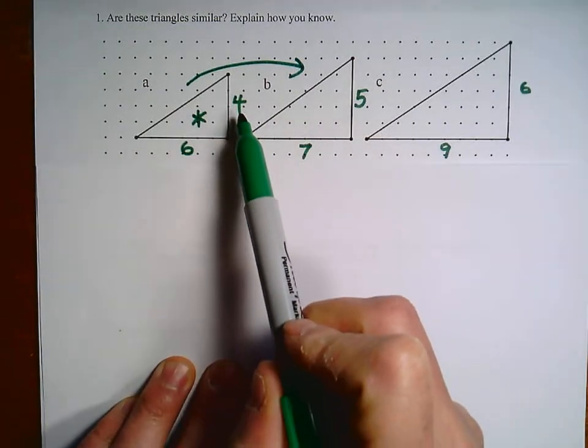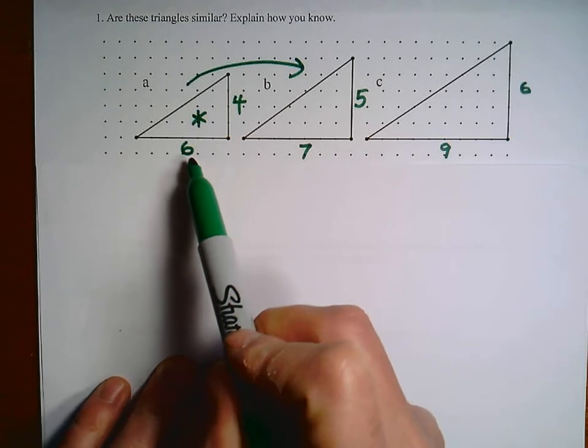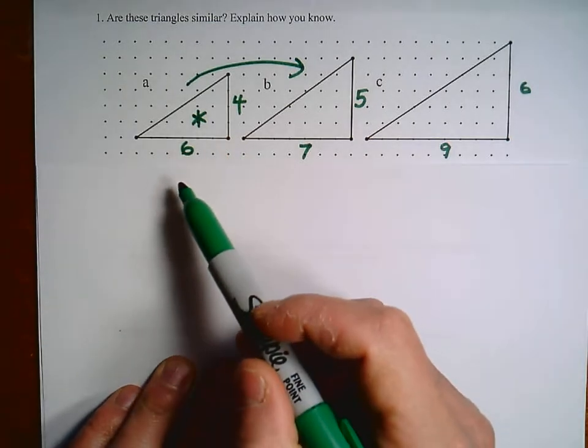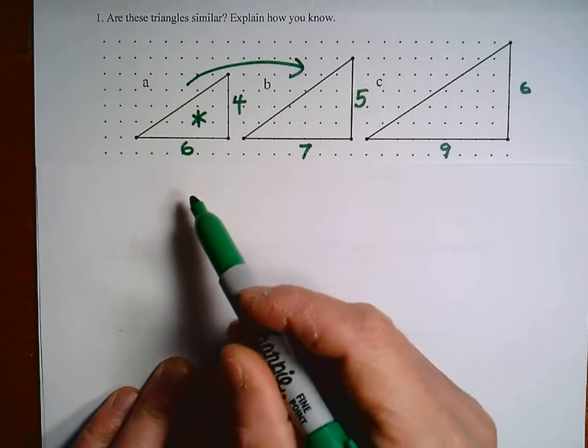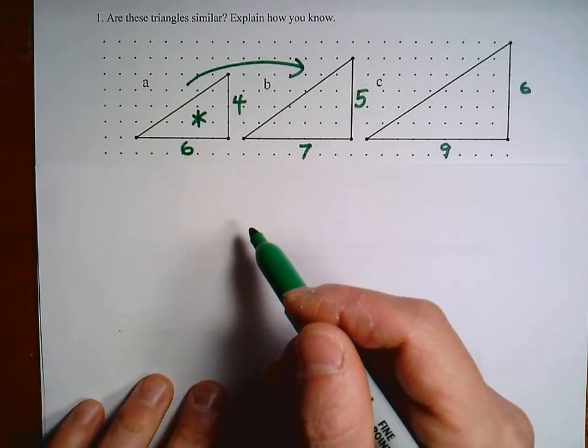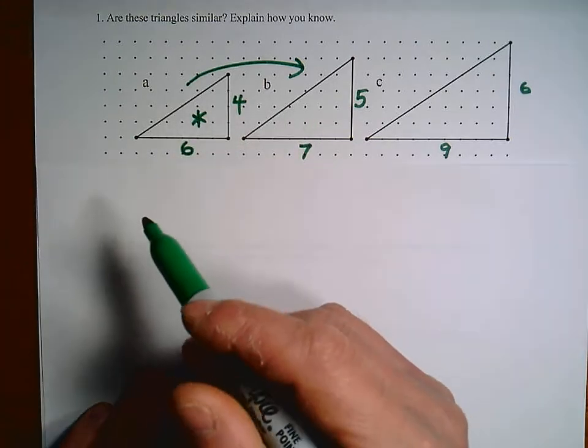You can see to go from four to five, you would have to add one, and to go from six to seven you'd have to add one. So I talked about in the earlier video that when we talk about similarity, the connection is not additive. So most likely, we can tell here that these two triangles are not similar.